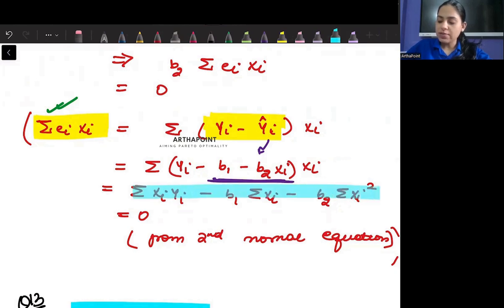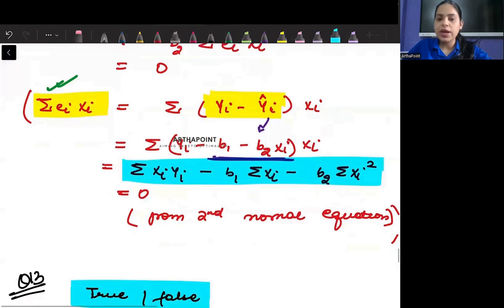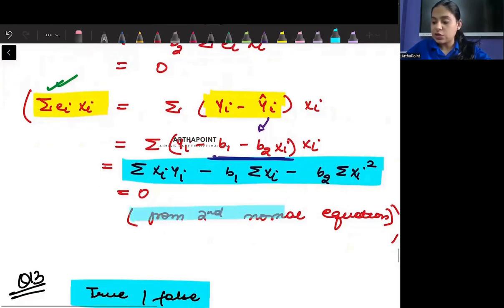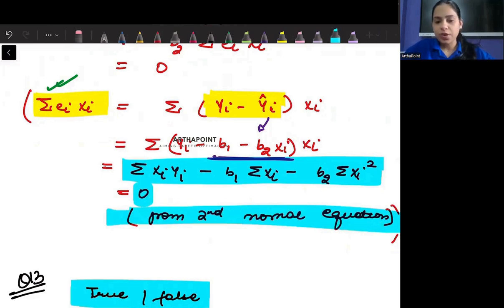Summation Xi Yi minus B1 summation Xi minus B2 summation Xi squared. And this is nothing but your second normal equation, and therefore you will get the answer as zero. So the statement is a true statement.